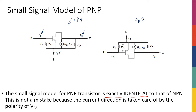This is not a mistake because the current direction is taken care of by the polarity of VBE. Yes, the changes are different for PNP and NPN, but we have already considered that in the large signal model. So for the small signal model, everything is going to be identical.